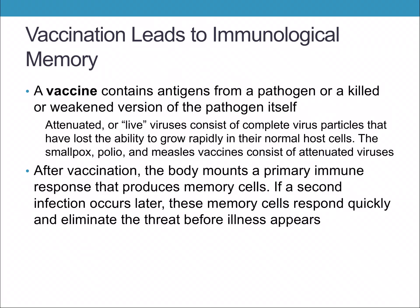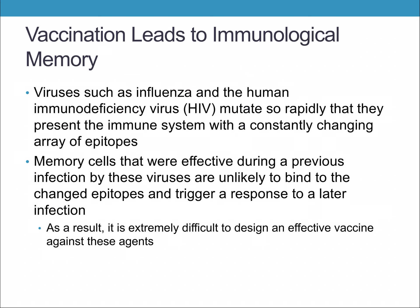Vaccines are our best defense against disease. However, some viruses mutate very quickly, such as influenza and HIV, and present the immune system with a constantly changing array of epitopes — markers on antigens. Memory cells effective during a previous infection are unlikely to bind to changed epitopes and trigger a response, making it difficult to design an effective vaccine. That's why you need a new flu vaccine every year when the flu mutates.